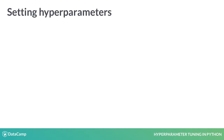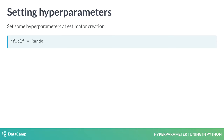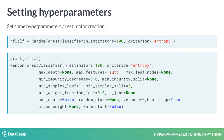We can set the hyperparameters when we create the estimator object. The default number of trees seems to be a little low, so let us set that to be 100. Whilst we are at it, let us also set the criterion to be entropy. If we print out the model, we can see the other default values remain the same, but those we set explicitly overrode the default values.